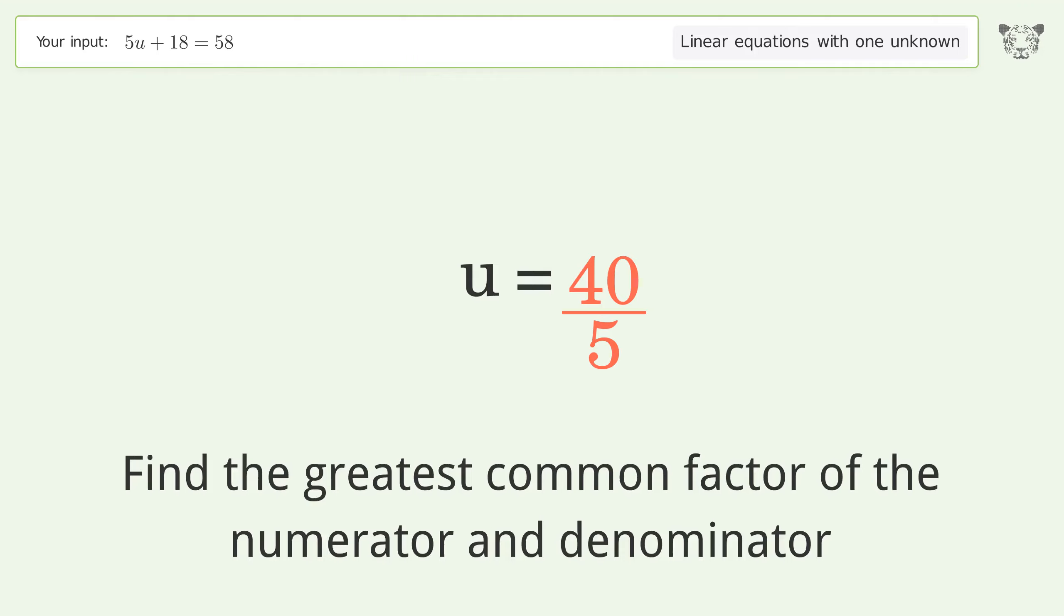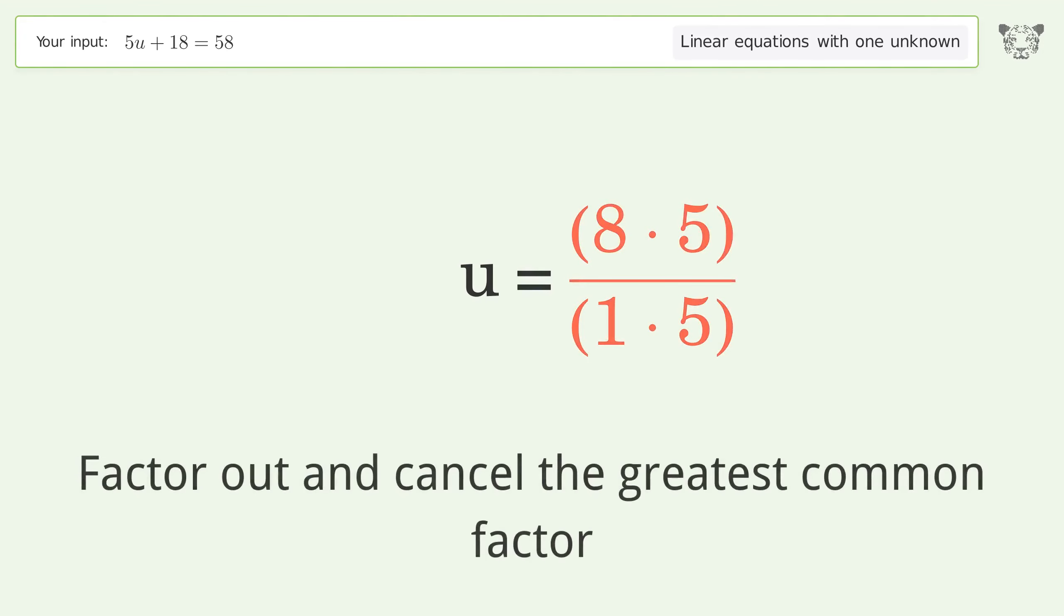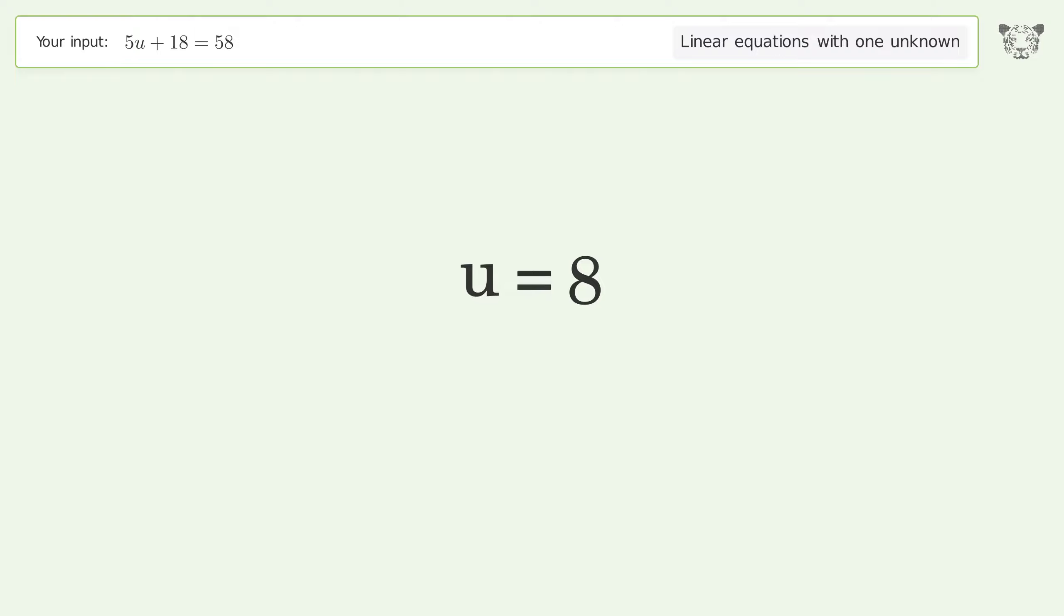Find the greatest common factor of the numerator and denominator. Factor out and cancel the greatest common factor. And so the final result is u equals 8.